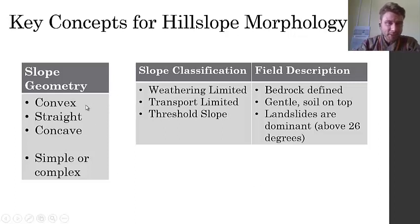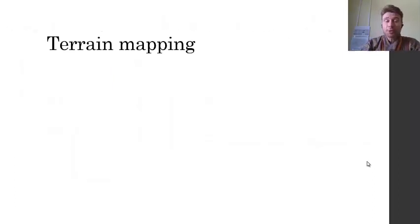How can we identify which type of geometry a slope has? And how can we classify slopes, especially by their slope angles? As you've known from geography education, to map terrain...